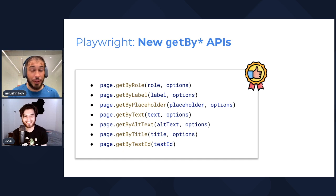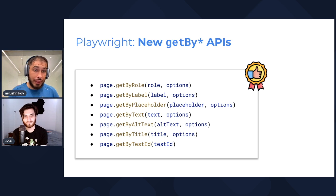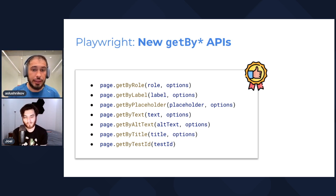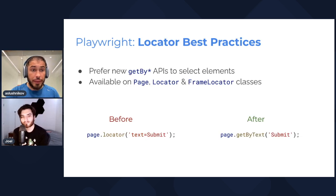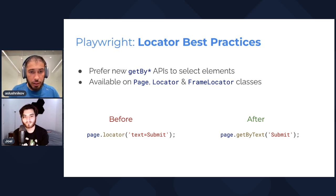These methods show in your autocomplete — if you have a typo somewhere, you'll see it. It's all very good. If you use these methods exclusively, you'll have really reliable and good tests, because these are the good selectors and good locators. The rule of thumb is to prefer the new getBy APIs to select elements, though the old methods like page.locator with string arguments aren't going away.